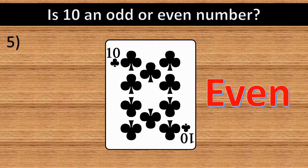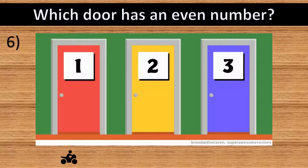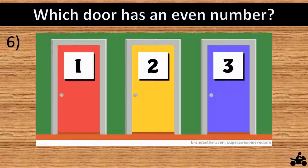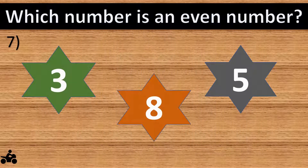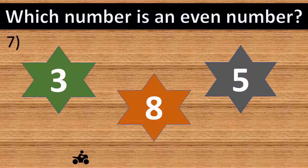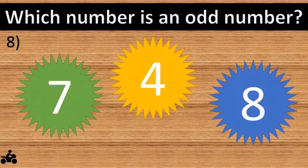Question number five: is ten an odd or even number? The answer is even. Question number six: which door has an even number? The answer is door number two. Question number seven: which number is an even number?